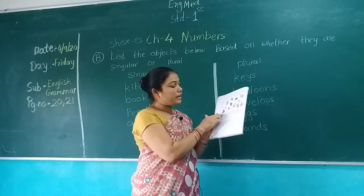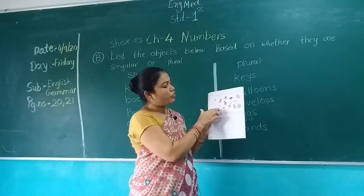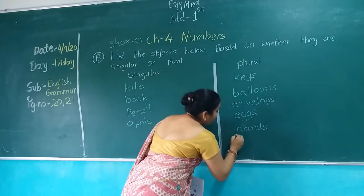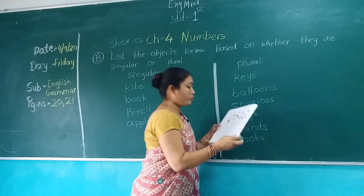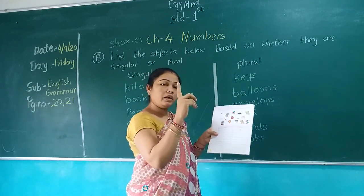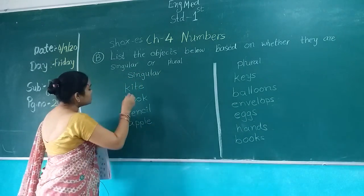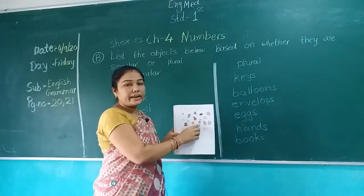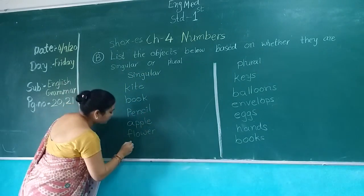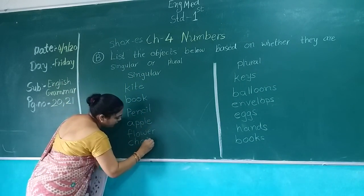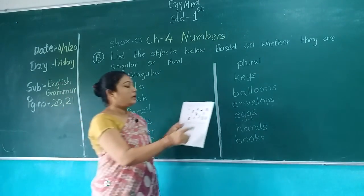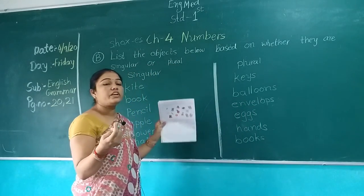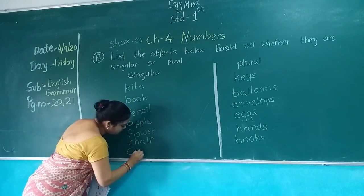How many books are here? 1, 2, 3, 4, 5. Five books are here, so it is called plural form. We write in the plural column: B-O-O-K-S, Books. How many flowers are here? Only one flower. So we write in the singular column: F-L-O-W-E-R, Flower. How many chairs are here? Only one chair. So we write in the singular column: C-H-A-I-R, Chair. How many cats are here? Only one cat. So we write in the singular column: C-A-T, Cat.